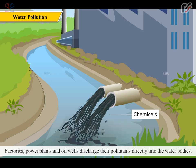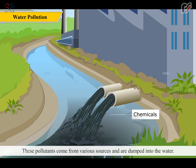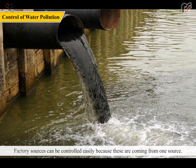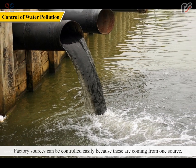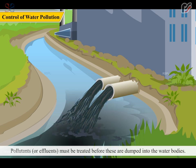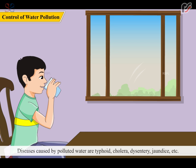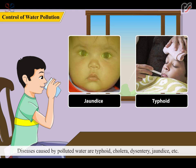Factories, power plants and oil wells discharge their pollutants directly into the water bodies. These pollutants come from various sources and are dumped into the water. Factory sources can be controlled easily because these are coming from one source. Pollutants or effluents must be treated before they are dumped into the water bodies. Diseases caused by polluted water are typhoid, cholera, dysentery, jaundice, etc.